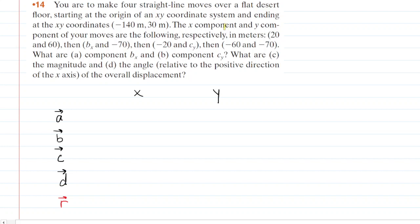In this question, we are given some components or at least partial components of four vectors. For example, the first vector has x and y components of 20 and 60. We've called that vector vector a, so we're going to fill in positive 20 for the x component and positive 60 for the y component.